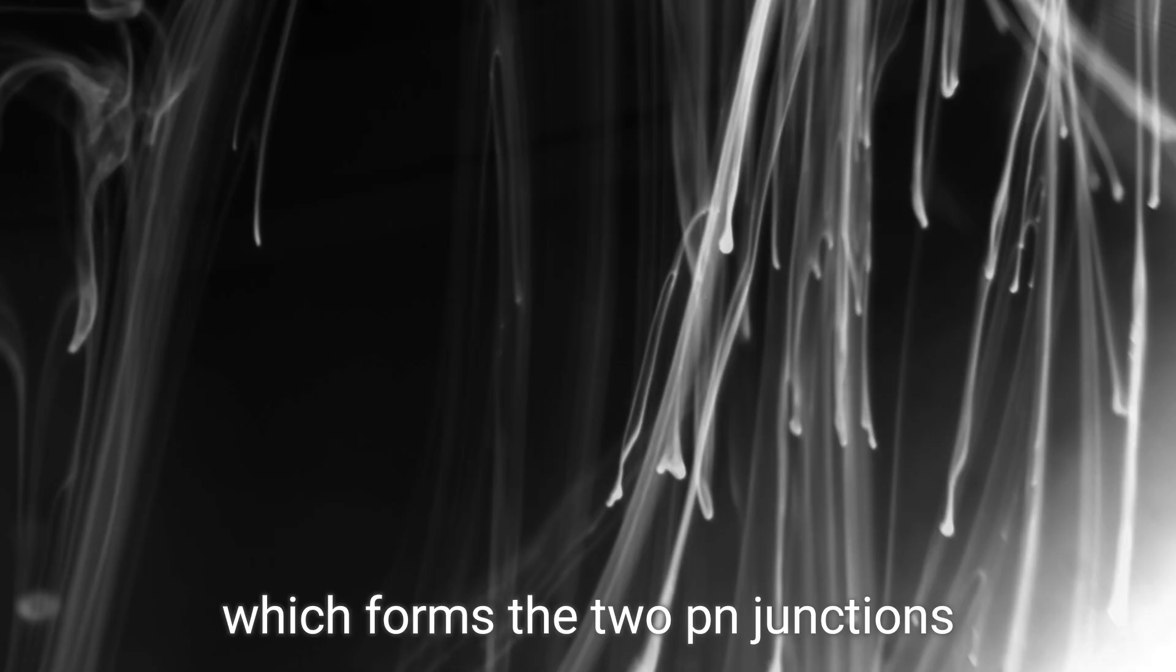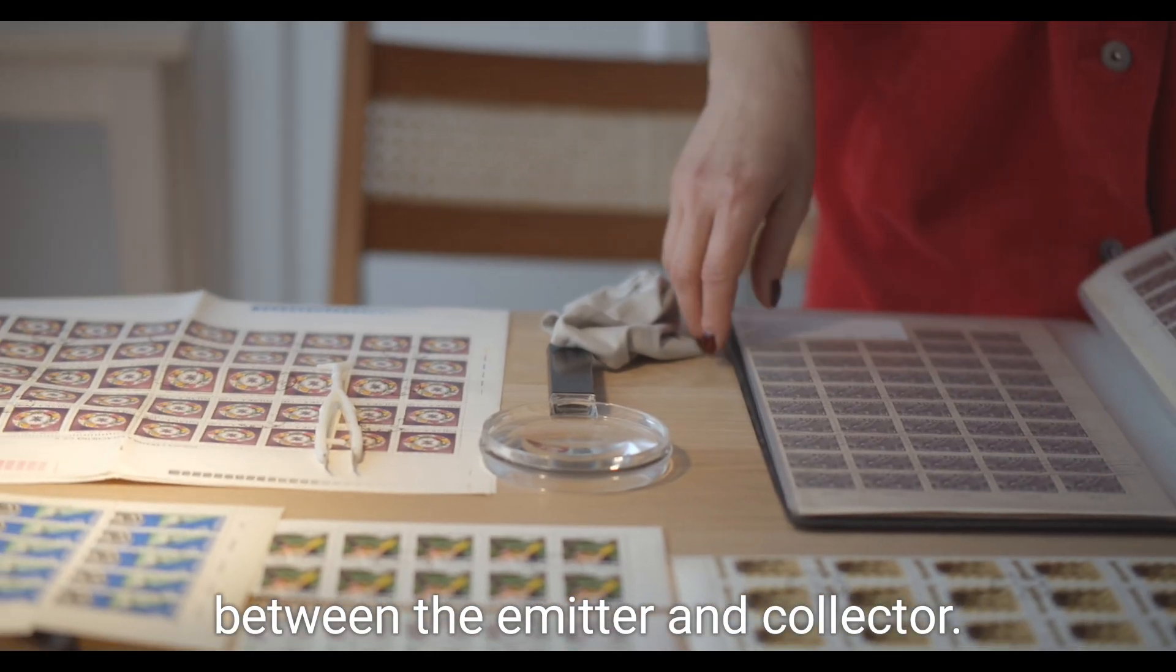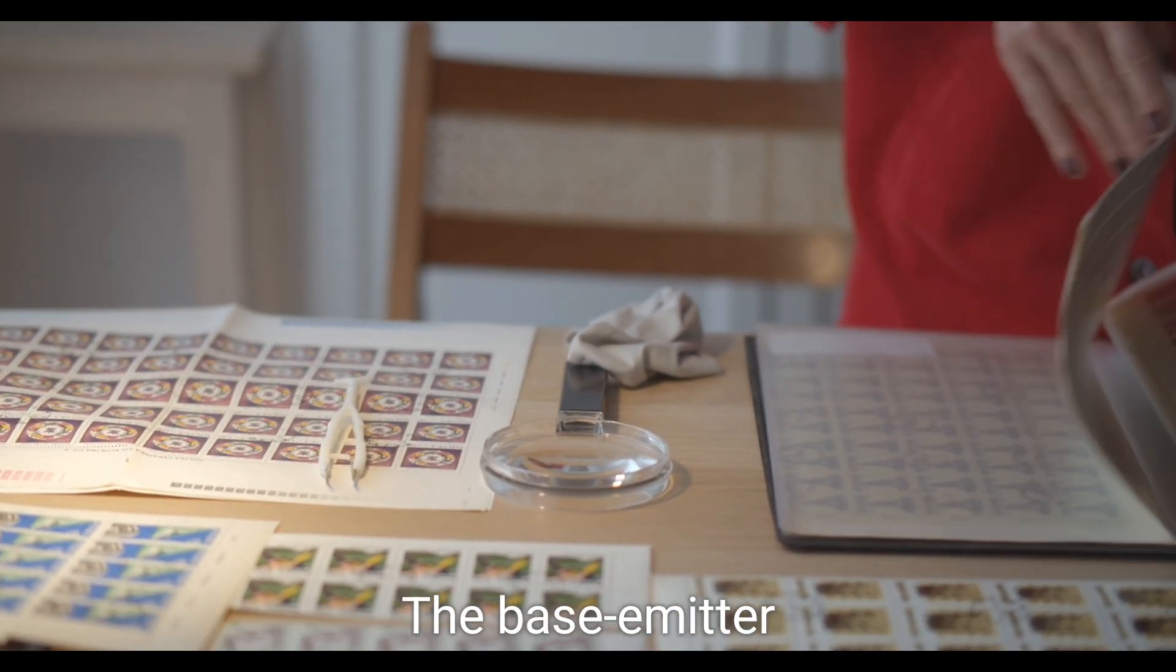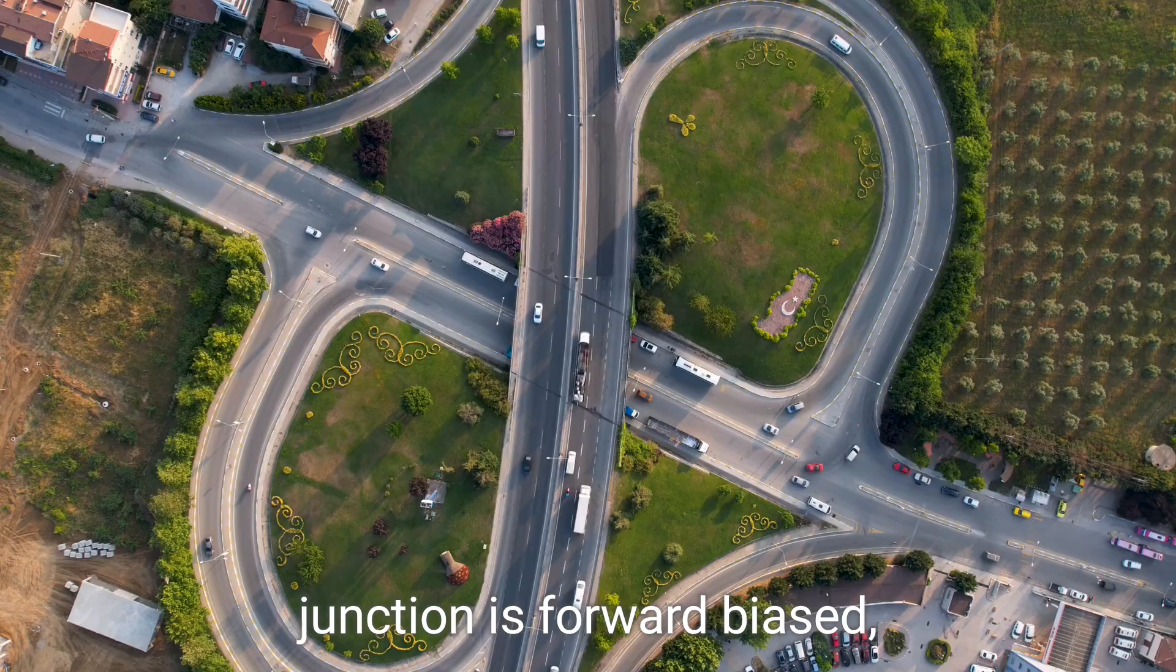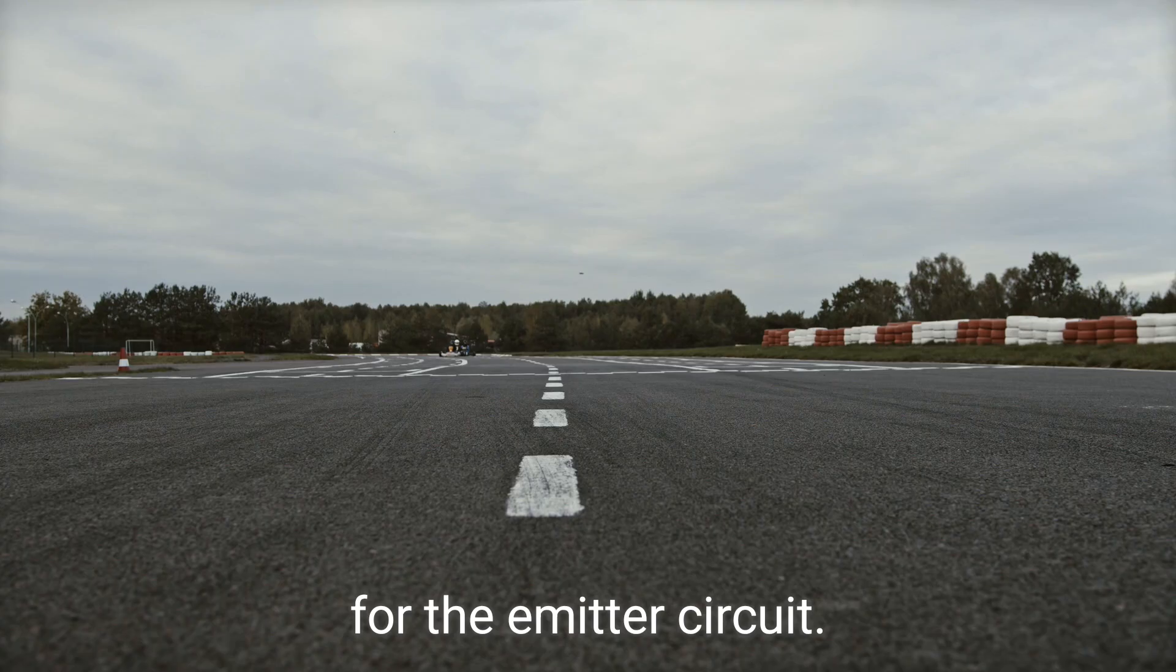Lastly, we have the base, which forms the two PN junctions between the emitter and collector. The base emitter junction is forward biased, allowing low resistance for the emitter circuit.